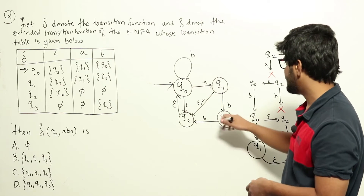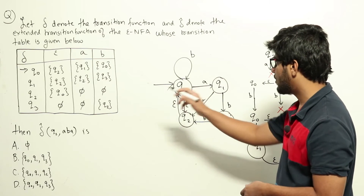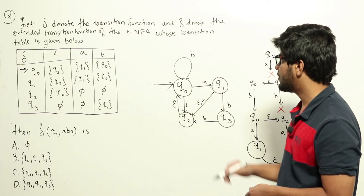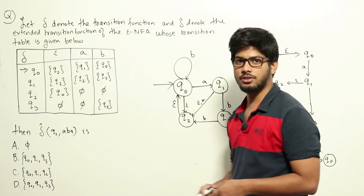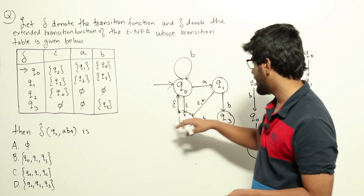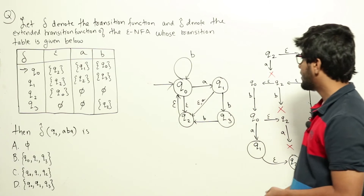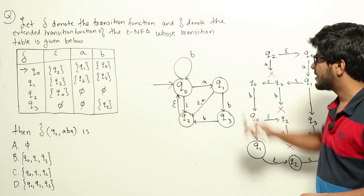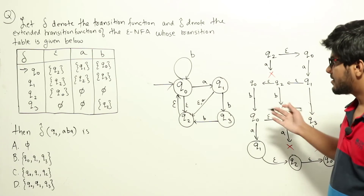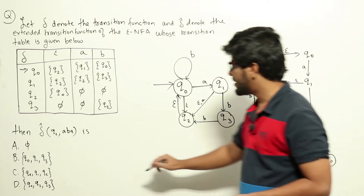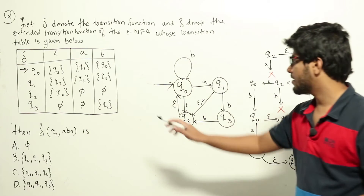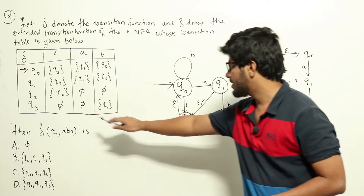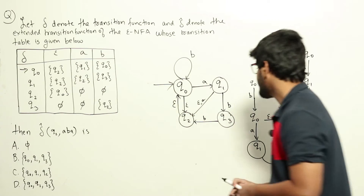From q3: on epsilon or a there is no transition; only on b we go to q2. Now based on this NFA, let us see what happens when we read string aBA starting from state q2.